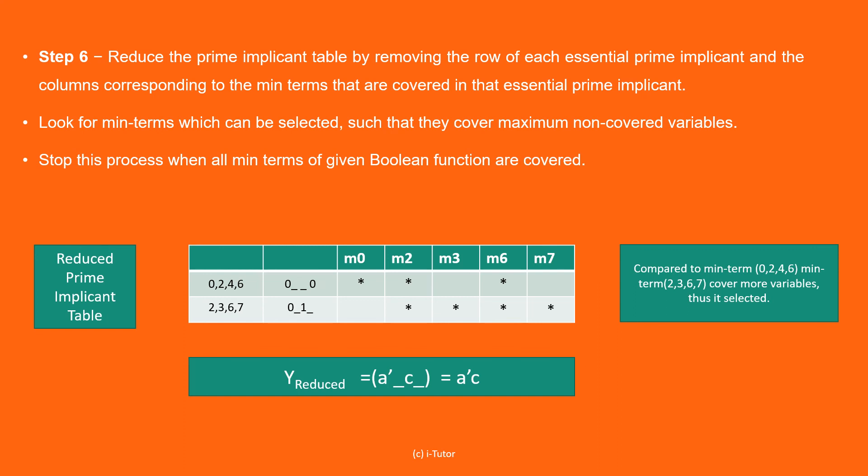Compared to minterm 0,2,4,6, minterm 2,3,6,7 covers more variables, thus it is selected.